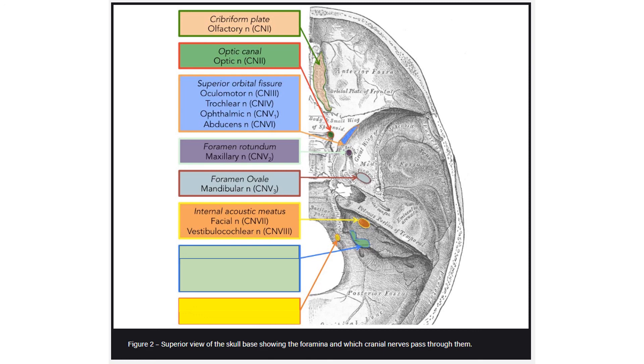Then we have the jugular foramen through which the glossopharyngeal, vagus, and accessory nerve pass.